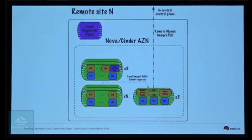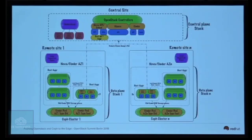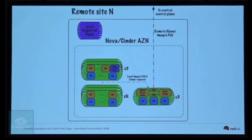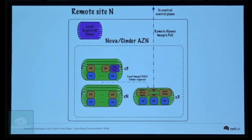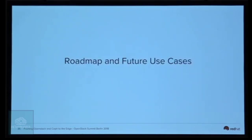Zooming in on the image issue: currently the setup would require Glance to pull the image on each site the first time the image is needed. Some people asked why we're not pre-populating the Glance cache. The issue is we don't have enough storage, or we don't necessarily use all images in all far edge sites. Pre-populating would help because on initial deployment you'd already have the image locally available, but it has some drawbacks.